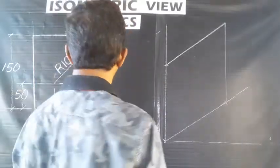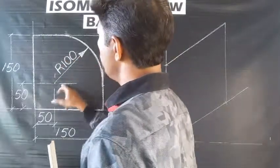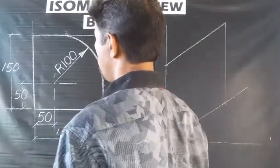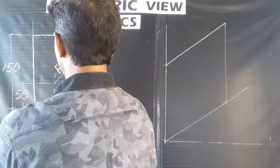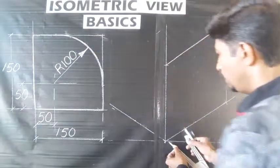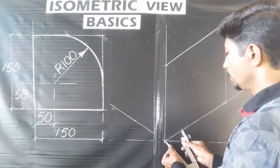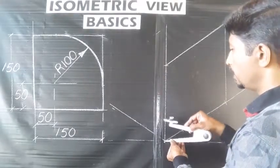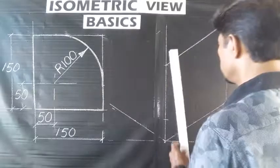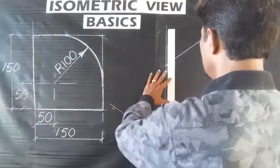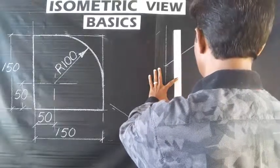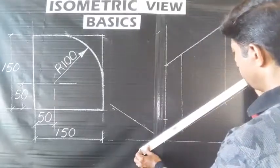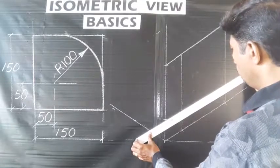The next step: in the arc, mark the center. Measure 50mm on the X-axis, and mark it. We can mark the isometric Z-axis and the isometric X-axis. At the point, call the vertical line — the line parallel to the isometric Z-axis — and also a line parallel to the isometric X-axis to locate the center.